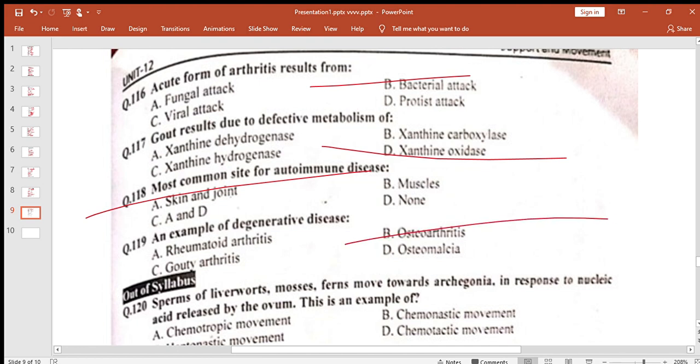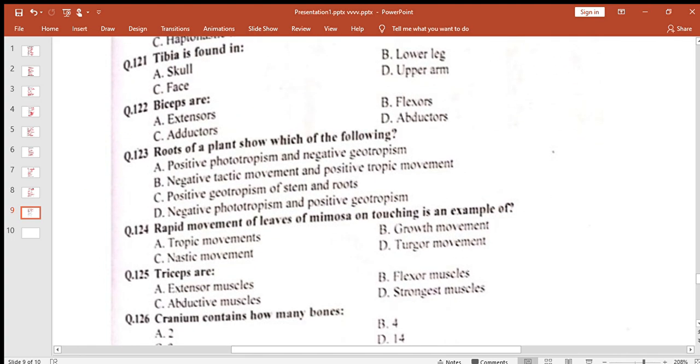Sperm of liver growth, moses, fern and wood, archibonia. Which movement? It is chemotropic movement. Chemicals.